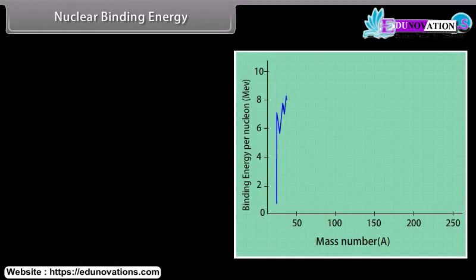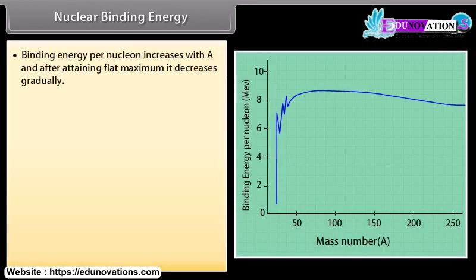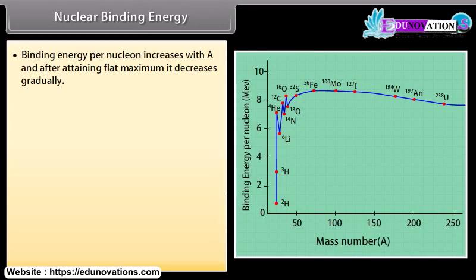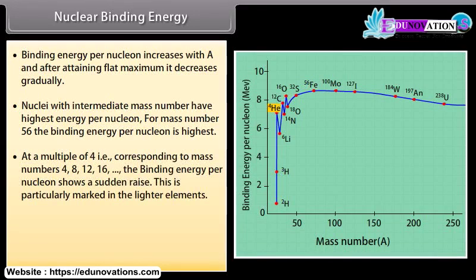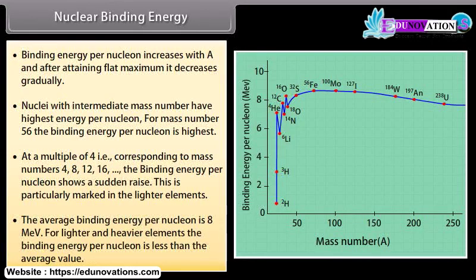From the graph, we note that binding energy per nucleon increases with A and after retaining a flat maximum, it decreases gradually. Nuclei with intermediate mass number have the highest energy per nucleon. For mass number 56, the binding energy per nucleon is highest. At multiples of 4, corresponding to mass numbers 4, 8, 12, and 16, the binding energy per nucleon shows a sudden rise, particularly marked in lighter elements. The average binding energy per nucleon is 8 MeV.